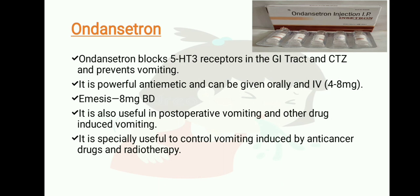The first drug in this class is ondansetron. Ondansetron blocks 5-HT3 receptors in the GI tract and CTZ, preventing vomiting. It is a powerful anti-emetic and can be given orally or intravenously. Dose: 4 to 8 mg. For nausea and vomiting, the dose is 8 mg BD. It is also useful in post-operative vomiting and other drug-induced vomiting, and is especially useful to control vomiting induced by anti-cancer drugs and radiotherapy.